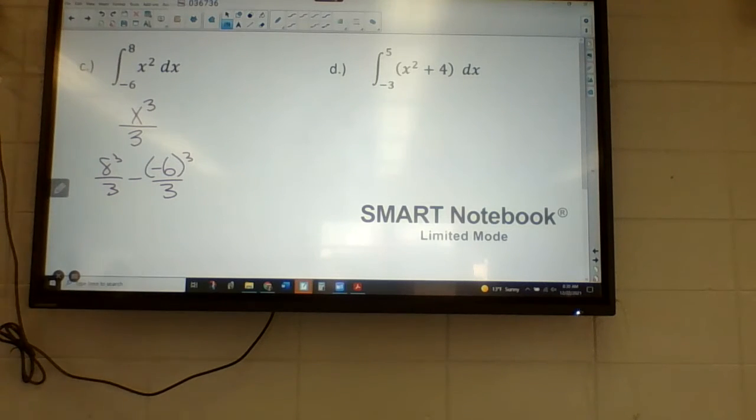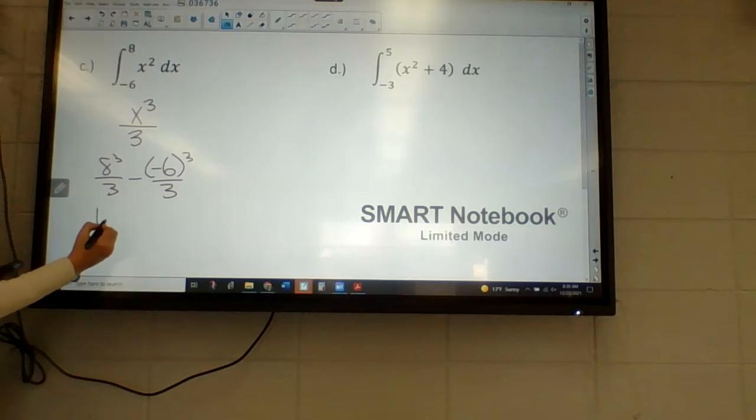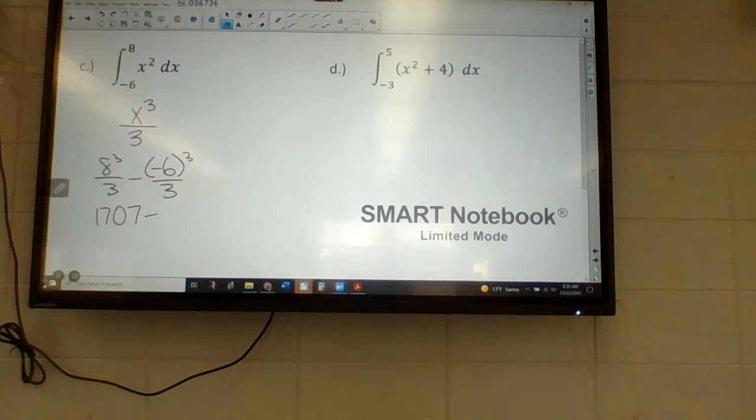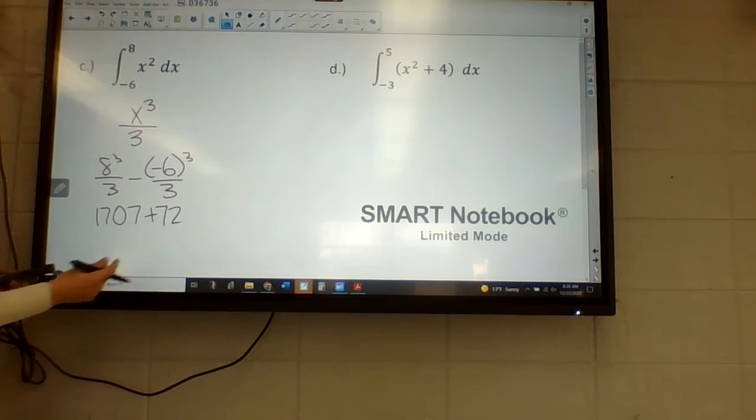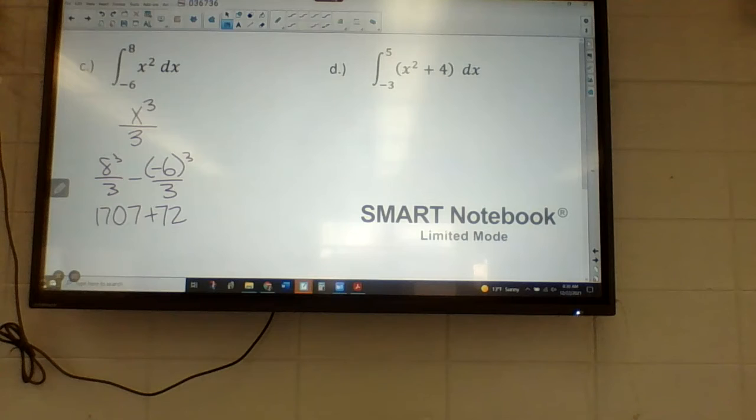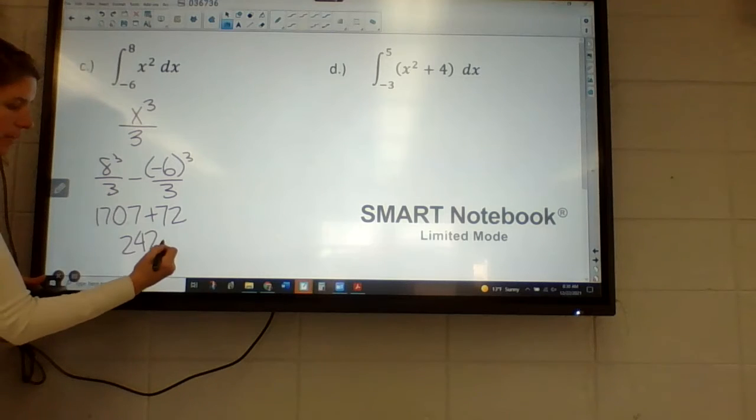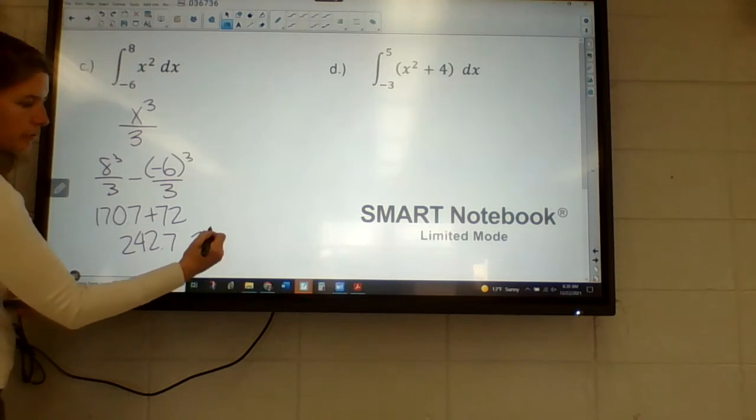To a couple decimal places. Well, they left it as a fraction—I'd be okay with that. Because it's like 170... Oh sorry, 170 and two thirds is 170.7. Now careful: negative 6 to the third is a negative, so this is going to become a positive 72. Good. So it'll be 242.7 or 242 and 2/3.